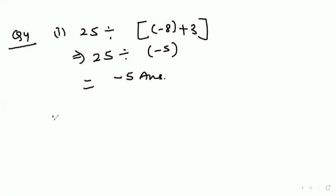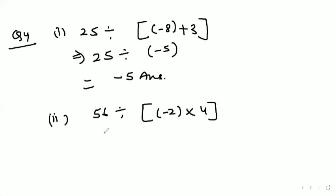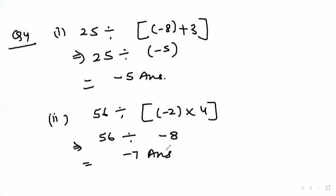Hope the question is clear; if any doubt, feel free to ask in the comment box. Second part: 56 divided by (minus 2 into 4). We solve the bracket first — minus 2 into 4 gives minus 8. Then 56 divided by minus 8 gives the answer minus 7.